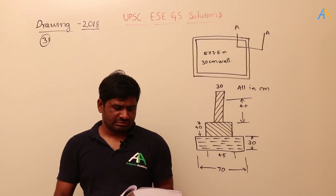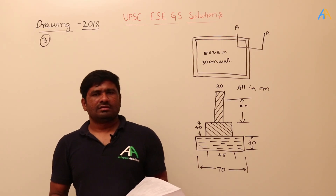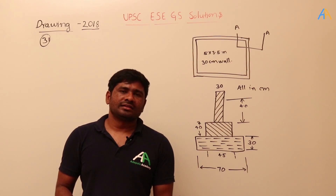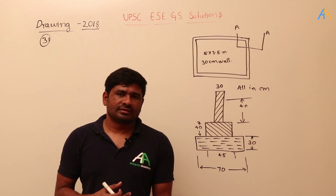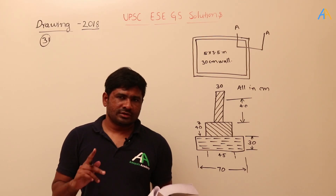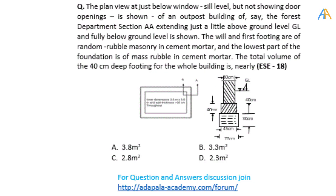The question is very big but also very easy. Everyone gets confused with section views unless they have practiced this section. Some questions are compulsory from section views. The plan view is at just below window sill level, not showing door openings, for an outpost building of the forest department. Section A-A extends just above ground level and fully below ground level. The wall and first two footings are of random rubble masonry in cement mortar.